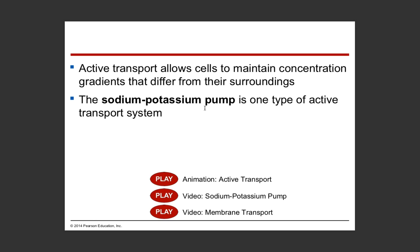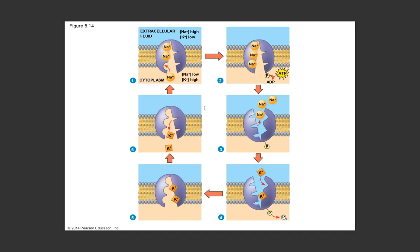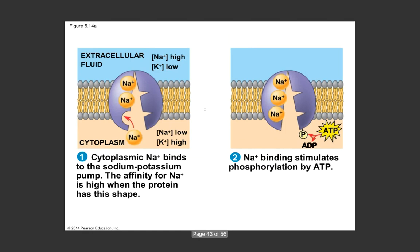Our first example is the sodium-potassium pump - creatively named because it moves sodium and potassium in and out of the cell. In step one, cytoplasmic sodium binds to the pump; the pump has a high affinity for sodium in its current shape, so three sodium ions attach. Then in step two, this sodium binding causes ATP to come along and phosphorylate - donate a phosphate to - this protein. When you take off a phosphate from ATP, you release energy, so you're attaching the terminal phosphate to the protein.